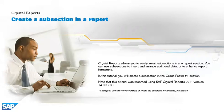Crystal Reports allows you to easily insert subsections in any report section. You can use subsections to insert and arrange additional data, or to enhance report formatting. In this tutorial, you will create a subsection in the Group Footer 1 section. Note that this tutorial was recorded using SAP Crystal Reports 2011, version 14.0.0.760. To navigate, use the Viewer controls or follow the on-screen instructions, if available.